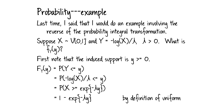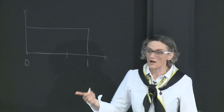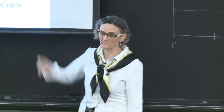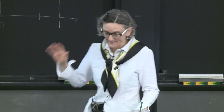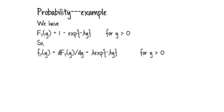Because X is uniform on (0,1), the probability that X is greater than any number is just one minus that number. When we're dealing with uniform random variables, we can often skip the step where we have to do the integral. So here's what we have: that's the induced support and that's the CDF of the new random variable. We just take the derivative to get the PDF.